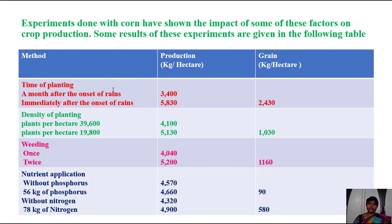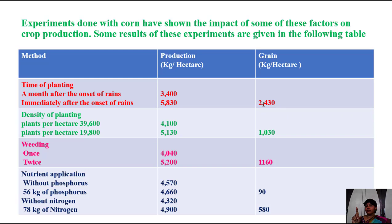The first factor is time of planting. If the farmer sows seeds one month after onset of rains, production is 3,400 kg per hectare. But if seeds are sown immediately after onset of rains, production is 5,830 kg per hectare — a difference of 2,430 kg per hectare. So it is very important to know when to sow seeds in the field to get high crop productivity.